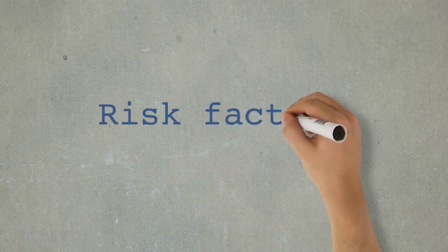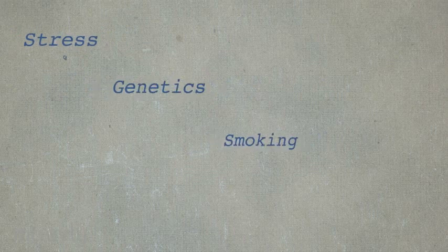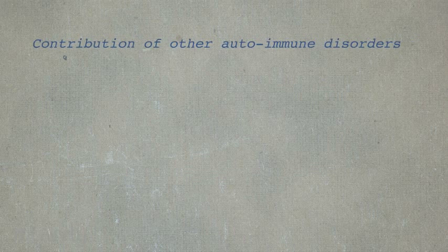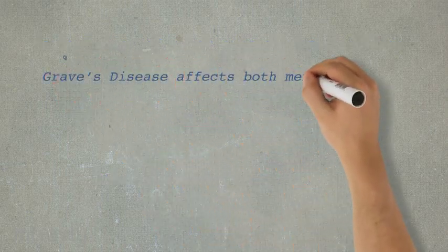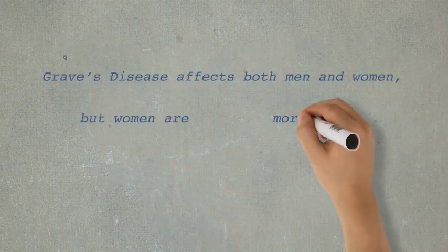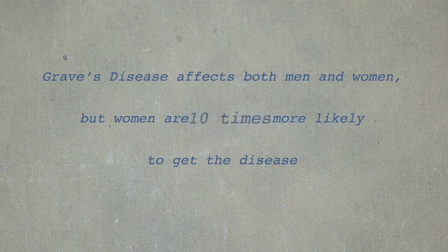Risk factors include stress, genetics, family history, smoking, pregnancy, contribution of other autoimmune disorders, and gender. The disease usually has onset between 20 to 40 years of age. The disease affects both men and women, but women are 10 times more likely to get the disease.